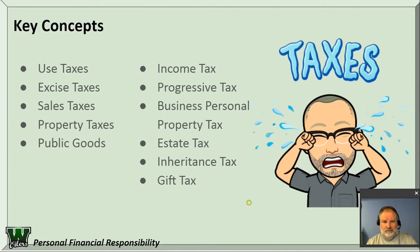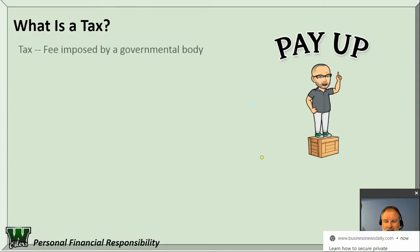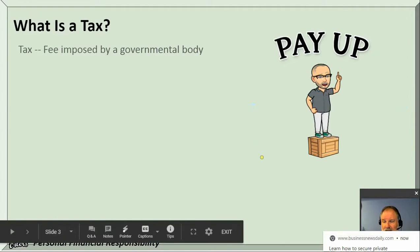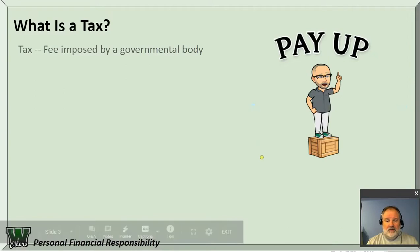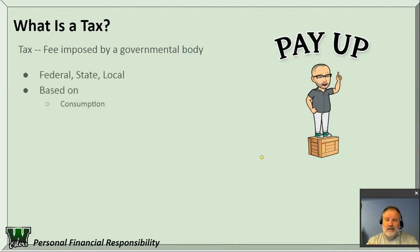So what is a tax? A tax is a fee imposed by a governmental body — there's federal bodies, state bodies, and local bodies. It's based on consumption, what you use, based on your income, or based on your wealth.